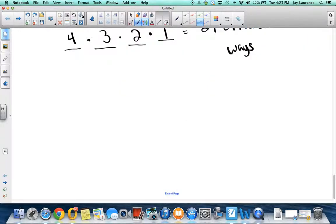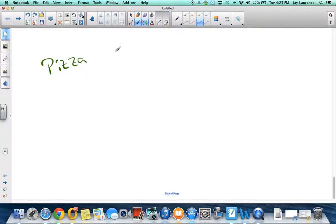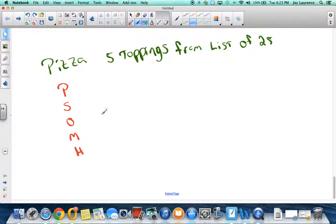All right. Tell you what. Let's do one more, and then we'll call it quits. Let's say you're going to order a pizza, and you're going to choose five toppings from a list of 25, and you're not going to pick like double pepperoni. You're going to pick five toppings. Well, is this a permutation or a combination? Well, let's see. Let's say your pizza is going to have pepperoni, sausage, onion, mushroom, and ham. Well, somebody else ordered a ham, sausage, onion, mushroom, pepperoni pizza. Are those pizzas different? No. They're exactly the same. It doesn't matter that they're put on in different order. So, here the order does not matter. This is a combination.